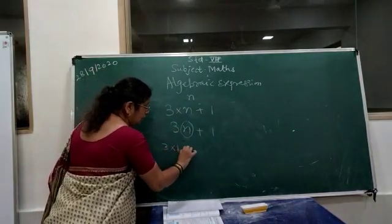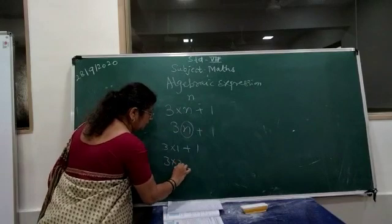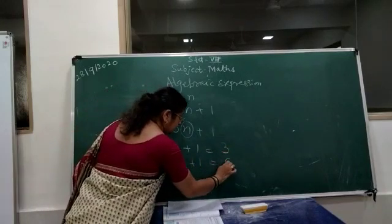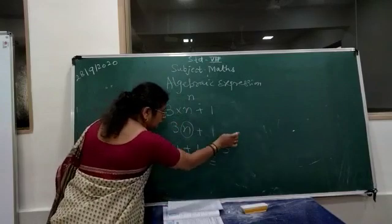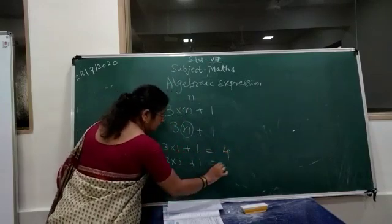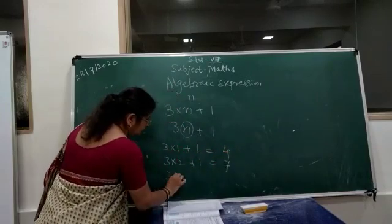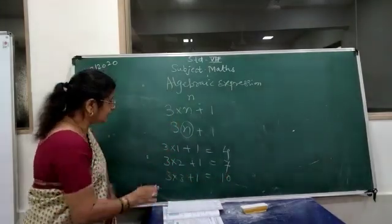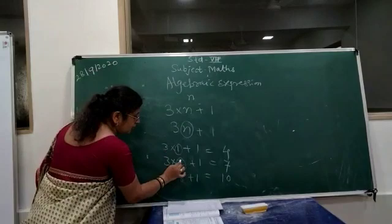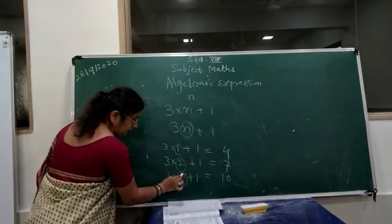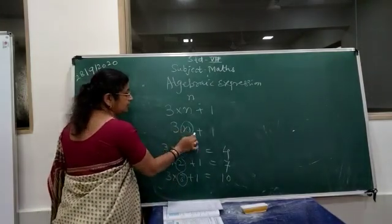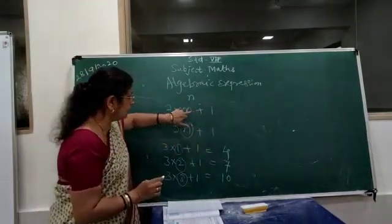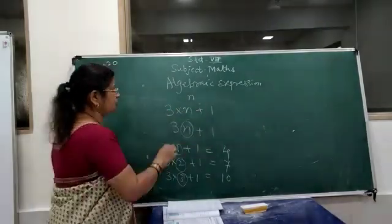For example: 3 into 1 plus 1 gives 4; 3 into 2 plus 1 gives 7; 3 into 3 plus 1 gives 9 plus 1, which is 10. So n is changing — these values are changing. Since n is a variable, 3n plus 1 is known as an algebraic expression.